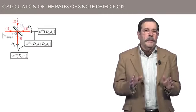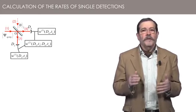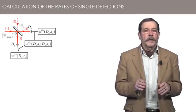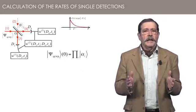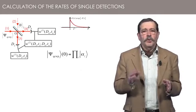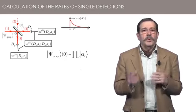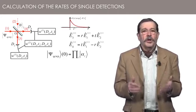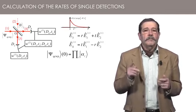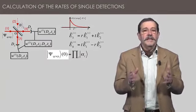We want to calculate the probabilities of single and joint detections in the output channels of the beam splitter for a quasi-classical wave packet at the input 1. As explained in detail in quantum optics 1, when you know the expression of the radiation state in the input space, a convenient way to do the calculation is to express the observables of the output space as a function of the observables of the input space. We use here the Heisenberg formalism. This is why I have written the input state at time t equals 0.